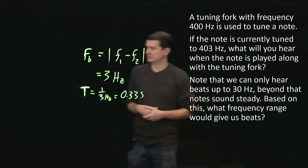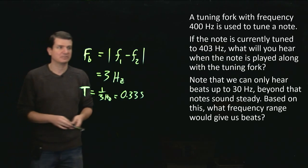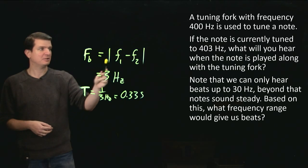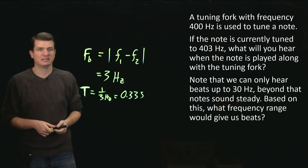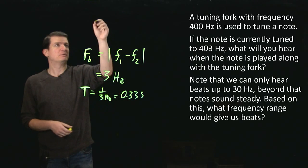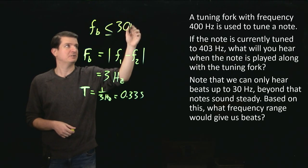And luckily there's not too much to do here. We've already got the equation that's important right here. We know that the frequency of the beats is always just the difference in frequencies. If the tuning fork is fixed at 400, and we want the beat frequency to be less than or equal to 30 hertz,